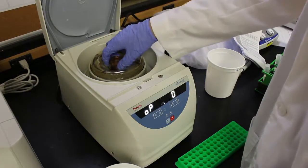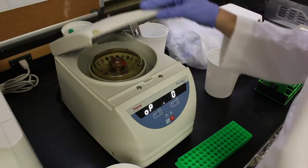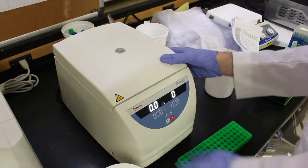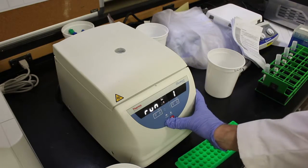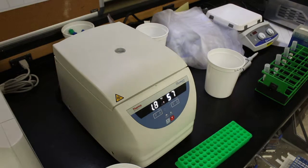To pellet, simply spin down the tubes at around 15,000 g's for a minute and discard the supernatant. Remember to label your tubes before you begin pelleting. 15,000 g's simply stands for 15,000 times the gravitational acceleration of the earth.